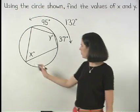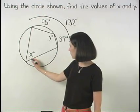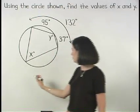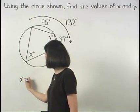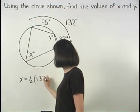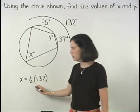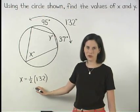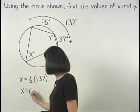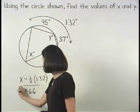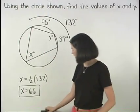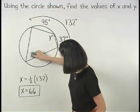So x, which represents the measure of the inscribed angle, equals one half times 132. One half times 132 is 66, so x equals 66. Which means that we can replace the x in our diagram with 66.